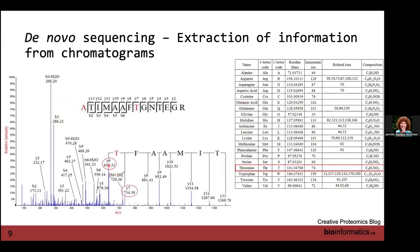The difference in mass between consecutive ions gives you the amino acid at that position. For example, a difference of 101 daltons corresponds to threonine, and a difference of 147 daltons corresponds to phenylalanine. So the software calculates mass differences between b1→b2, b2→b3, and equivalently for y ions, generating the full peptide sequence. Once generated, that sequence maps to your FASTA file and you can identify your proteins.